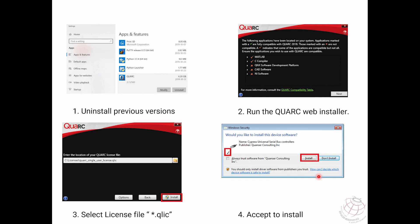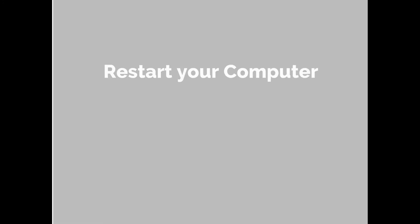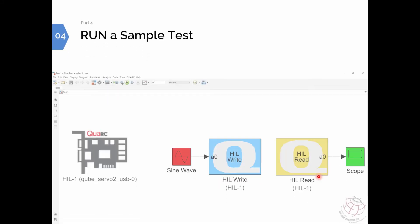During installation, a window will appear asking: 'Would you like to install this device software?' I recommend selecting 'Always trust software from Quanser Consulting Inc.' and clicking Install. It asks this several times, so trusting it upfront means it will install all required products without repeated prompting. Once installation is done, restart your computer one final time — after this restart, your computer is ready to run a sample test with MATLAB.